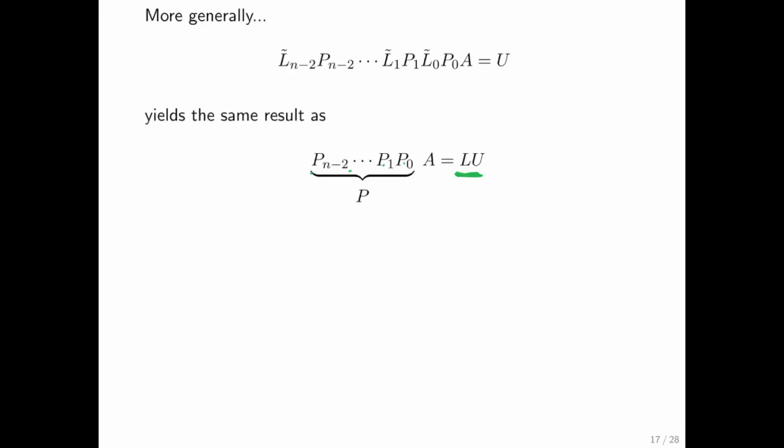And the result then is a lower triangular matrix and an upper triangular matrix. Now what does that mean?